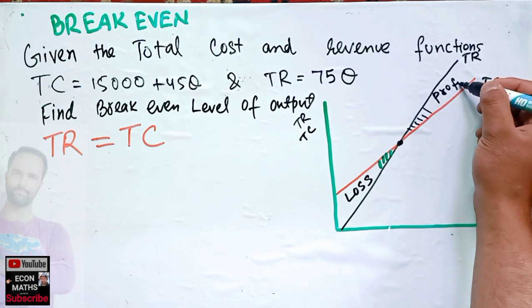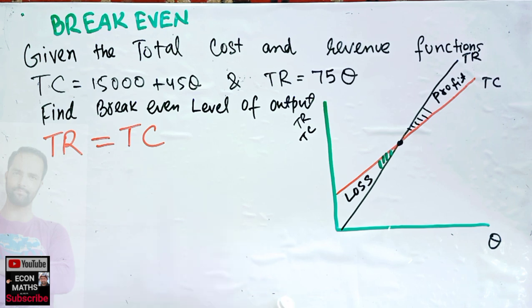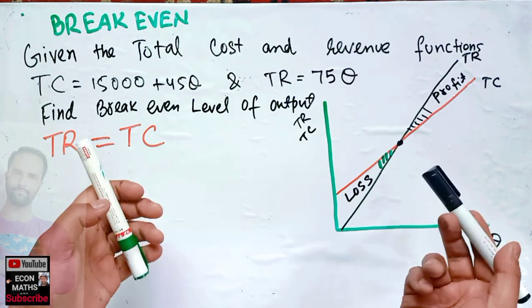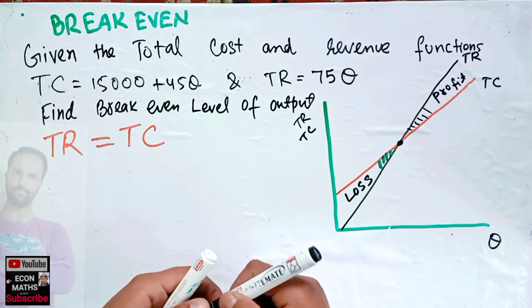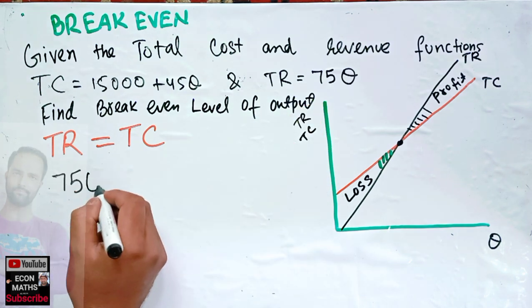You can see total revenue curve above the total cost denotes profit. When total cost curve is above total revenue curve it shows loss. This point where total revenue equals total cost gives us break-even level of output. So total revenue is 75Q and this...